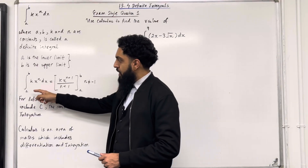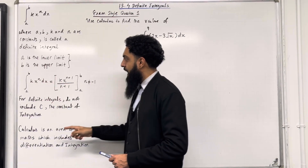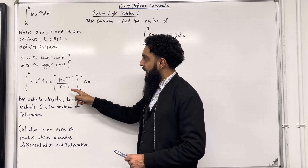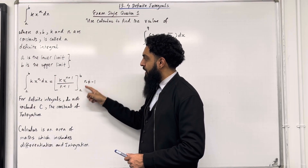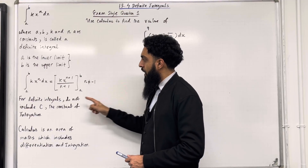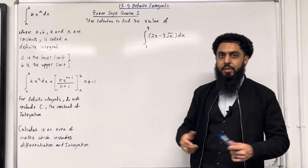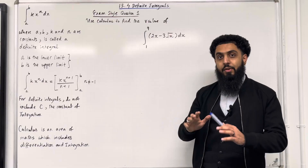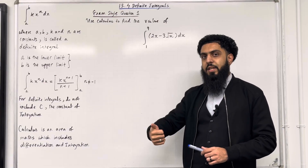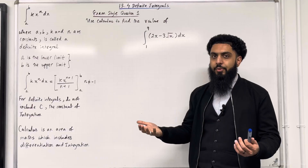The integral from A to B of Kx to the power n dx is equal to Kx to the power n plus 1, divided by n plus 1, taking limits A to B. N is not equal to negative 1. Definite integrals do not include C, the constant of integration. If you were to include the constant of integration C and substitute your limits in, the C's will cancel.